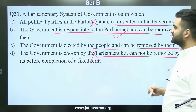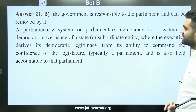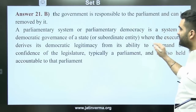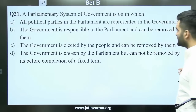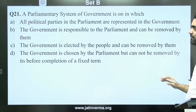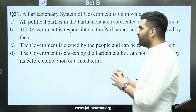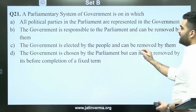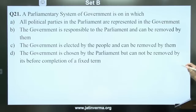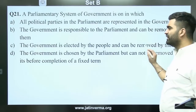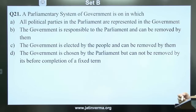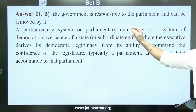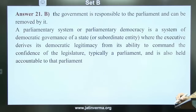The answer to question 21 is B. There is some clash between options B and C. Option B says government can be removed. From my perspective, answer C should also be considered equally correct, but we have given B as the official answer. This reflects the nature of UPSC questions — sometimes only UPSC knows the exact correct answer.